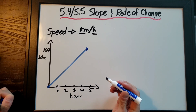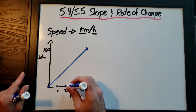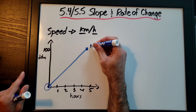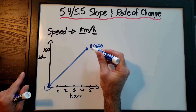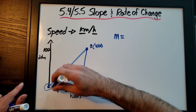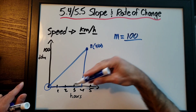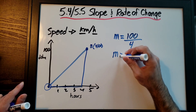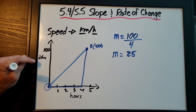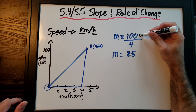To find the rate of change, we use the same process as finding slope, but express the answer with units. I pick two definitive points: (0, 0) and (4, 100). M equals rise over run: the rise is 100 and the run is 4. That gives us 100 over 4, which reduces to 25. Because this is a rate of change, I include units.